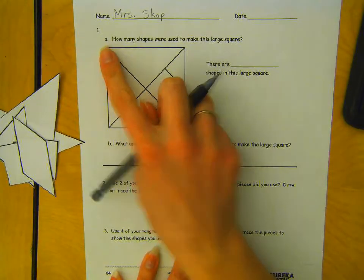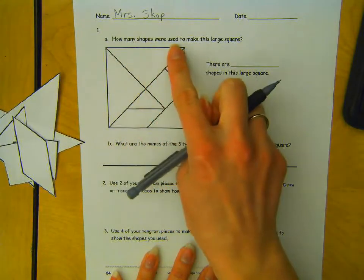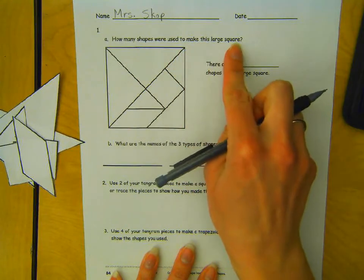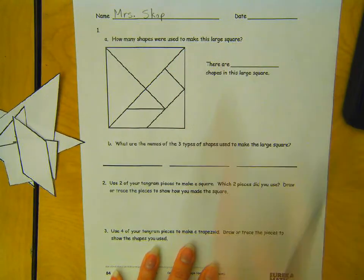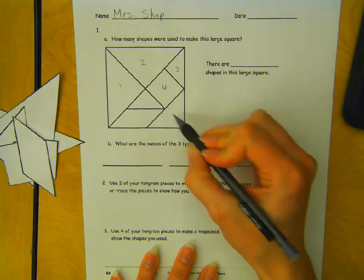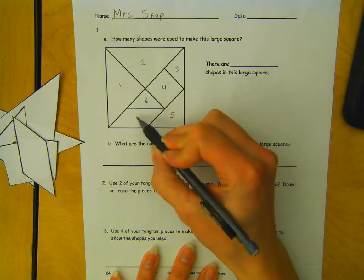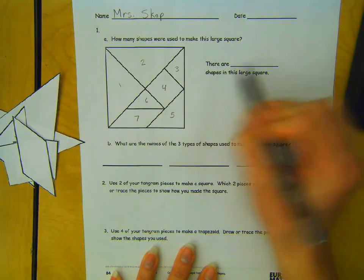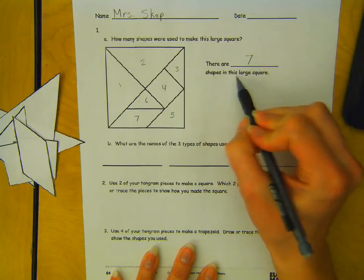1A says, how many shapes were used to make this large square? So we have 1, 2, 3, 4, 5, 6, 7. There are 7 shapes in this large square.